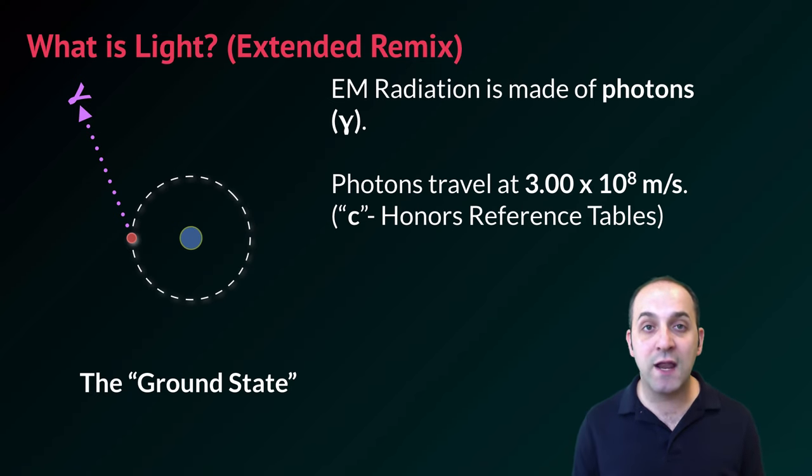So electromagnetic radiation is made of photons and photons travel incredibly fast. The speed of a photon in a vacuum is 3.00 times 10 to the eighth meters per second. This is a constant. It's defined as C and it is given to you on your honors reference tables. It's the speed of light in a vacuum, something you've probably seen before at different places in your life.